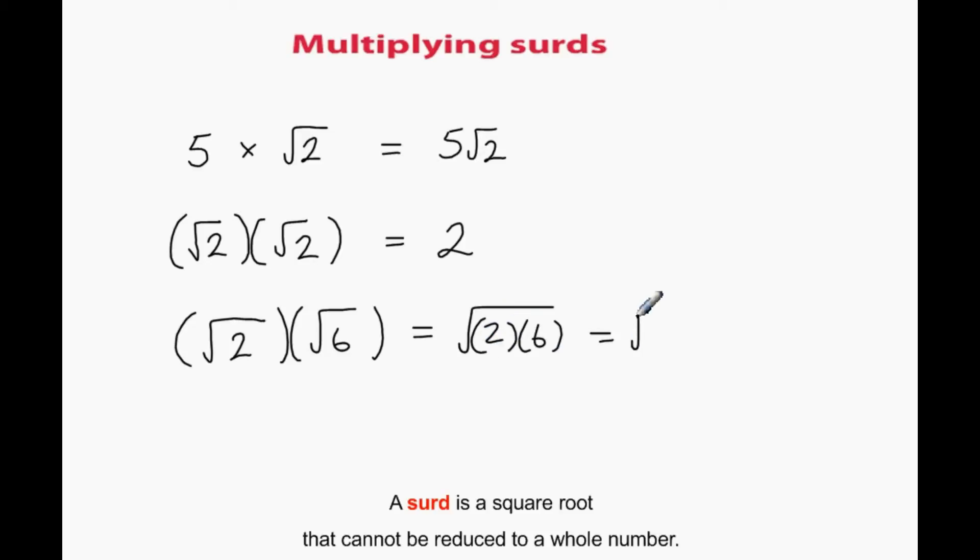Root 2 by root 6, we can write them both underneath a square root sign, so it becomes root 12. And this simplifies in the way we looked at before, because 4 goes into 12, so it's 2 root 3.